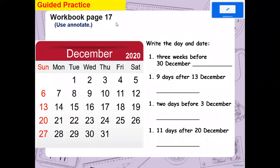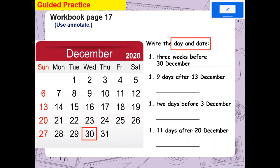Now, this is from your workbook page 17. This is the month of December 2020. Let's answer these questions. Write the day and date — you have to write both. First: three weeks before 30th December. This is 30th December — what is the day and date three weeks ago? Divide your question into segments: today is 30th December 2020, and you move backwards three weeks using the trick I told you a few minutes ago.